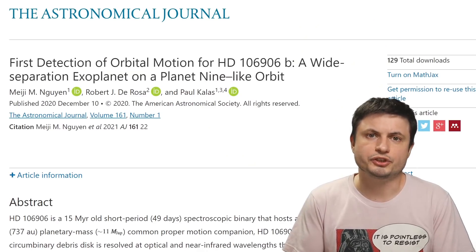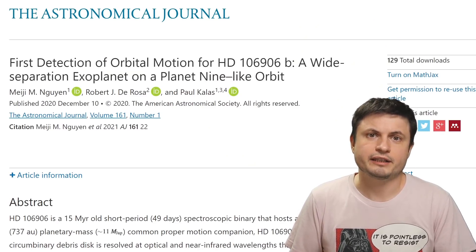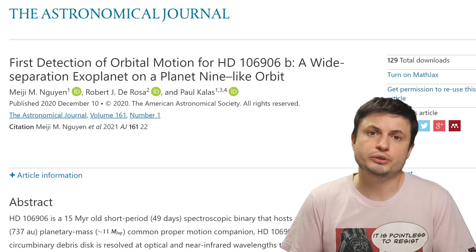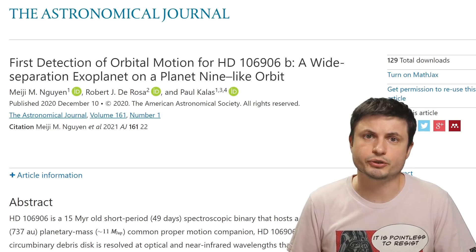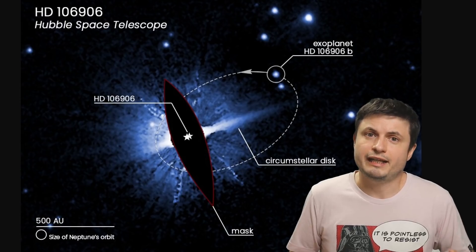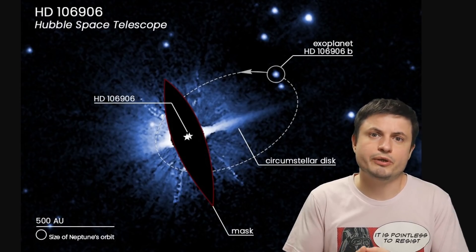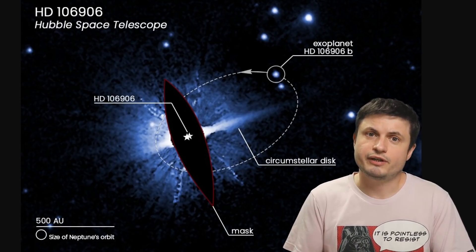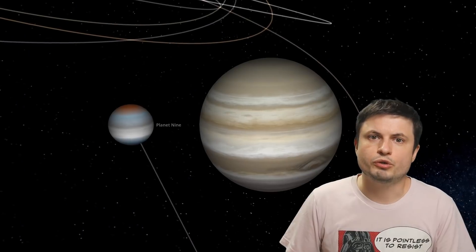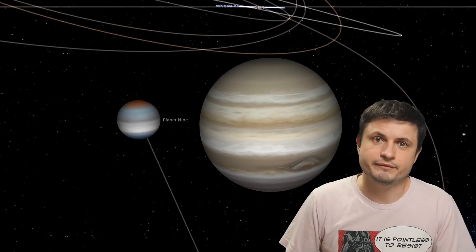But despite the distances involved and the fact that we knew nothing about its orbit, the scientists behind the study were able to use the observations from the Hubble telescope and essentially using the observations over the past 14 years. They were then able to create the orbital parameters for this planet, discovering its exact orbit and realizing that it's very similar to the orbit we predict Planet 9 to have.